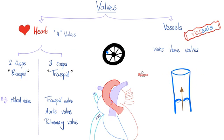Arteries are supposed to carry oxygenated blood, but the pulmonary artery is an exception — it's an artery that carries deoxygenated blood. Veins are supposed to carry deoxygenated blood, except the pulmonary veins, which carry oxygenated blood. An artery is defined as a vessel that takes blood from the heart to another organ — away from the heart and towards the organ. A vein is the exact opposite: a vessel that takes blood from an organ to the heart.